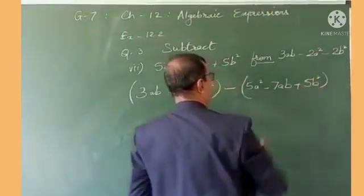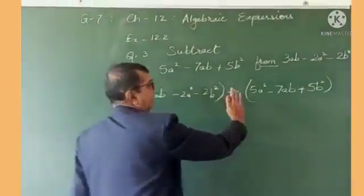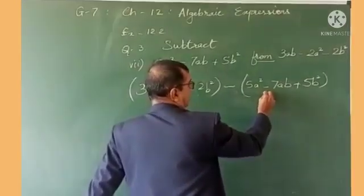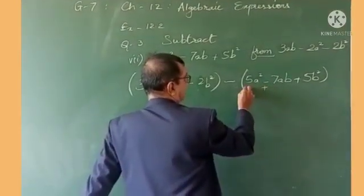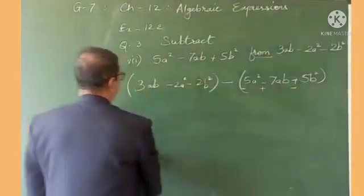Now, because this is a subtraction problem, when the minus sign comes before the bracket, all the terms in the second bracket will change signs. This will become minus, this will become plus, then this will become minus.